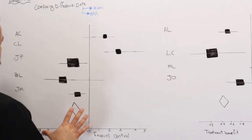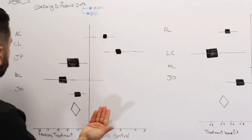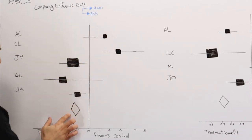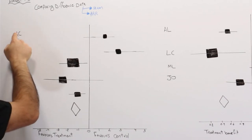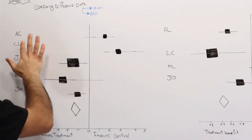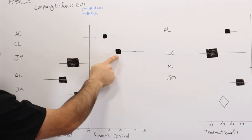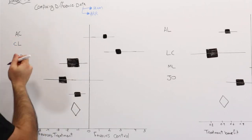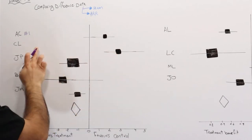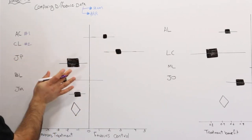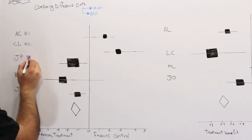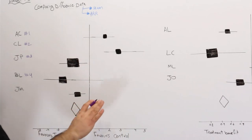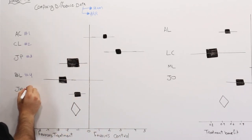When looking at a forest plot, you'll see the names of each study. Each square represents a study — specifically, the point estimate of that study's result. The letters shown are just example names: study one is AC, study two is CL, study three is JP, study four is BL, and study five is JM.